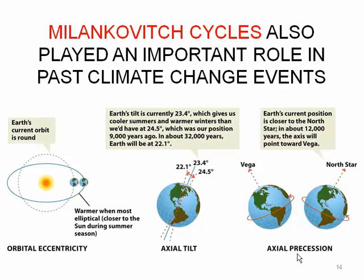Finally, the Milankovitch cycles play a role in climate and climate change, though they happen over much longer time periods — tens of thousands of years. This happens when the earth's orbit, which is not completely stable, changes slightly from a circular to a more elliptical pattern, and the axial tilt changes by several degrees. This influences whether more ocean or more land surface is exposed to the sun, changing the heat loading and whether the earth is warming or cooling. Again, this is happening on a much longer time scale than we are seeing with recent global warming.